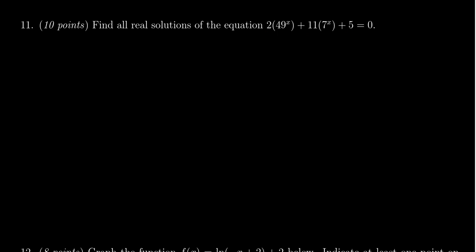The first thing to notice here is that you have this 7^x and a 49^x. The relationship between 49 and 7, of course, is that 7 squared is 49. What that tells us is if I take 7^x and square it, that is going to give you 49^x by usual exponent laws.